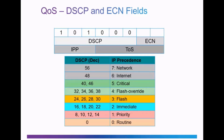An IPP classification of 5 involves the relevant bits set to produce a value of 4 plus 1, equaling 5, which signals a critical flow. Under the DSCP specification, you have 6 bits. The bit values are 32 and 8, and 32 plus 8 equals 40. So you can see how IPP value 5 using 3 bits maps to DSCP value 40 using 6 bits. Since DSCP uses 6 bits, there are 64 possible classifications of traffic.